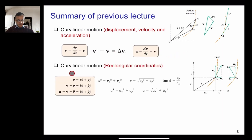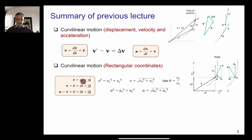We also discussed representing curvilinear motion in terms of a rectangular coordinate system. R can be split into two components, X and Y. XI means the X component along the I direction, where I is a unit vector in the X direction, and J is a unit vector along the Y direction. So R equals XI plus YJ. Similarly, velocity can be split into X dot (velocity in X direction) and Y dot (velocity in Y direction). Acceleration can also be split: X double dot in the X direction and Y double dot in the Y direction.